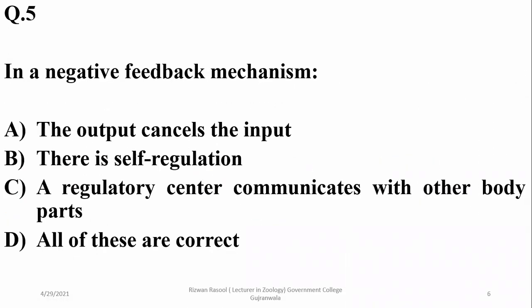In a negative feedback mechanism, the output cancels the input. There is self-regulation, and a regulatory center communicates with other body parts — this also happens in positive feedback. However, the output canceling the input is a characteristic of negative feedback. All these actions of self-regulation are involved in the negative feedback mechanism, so delta is the right option.